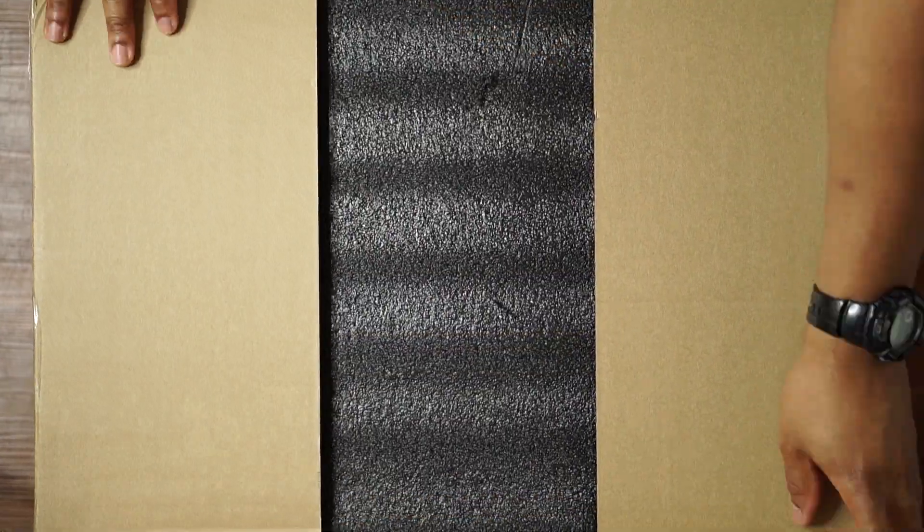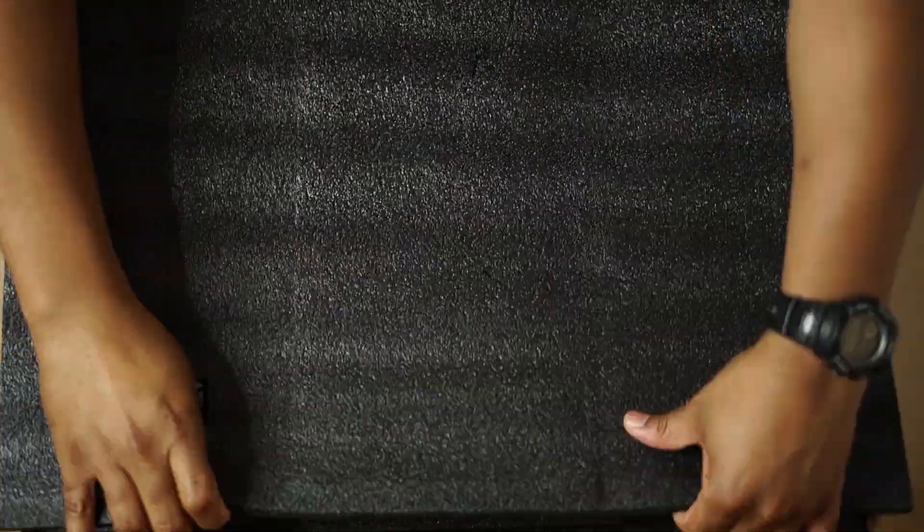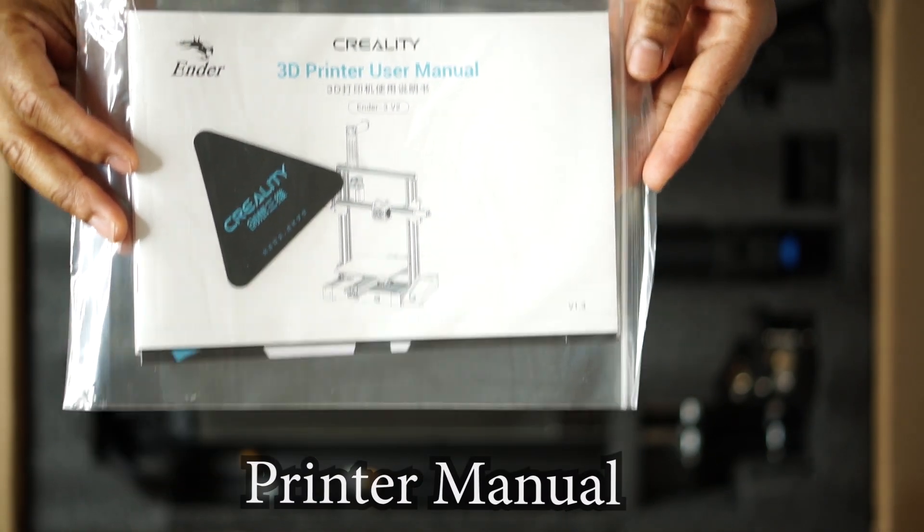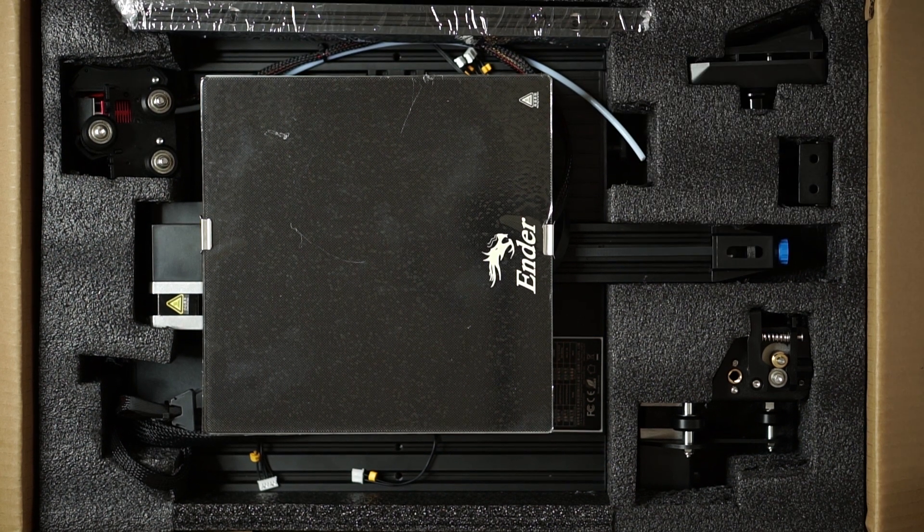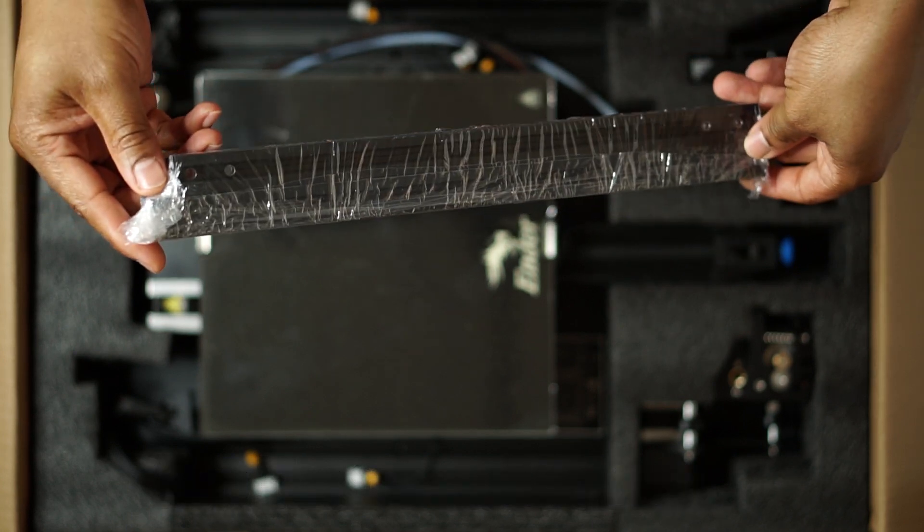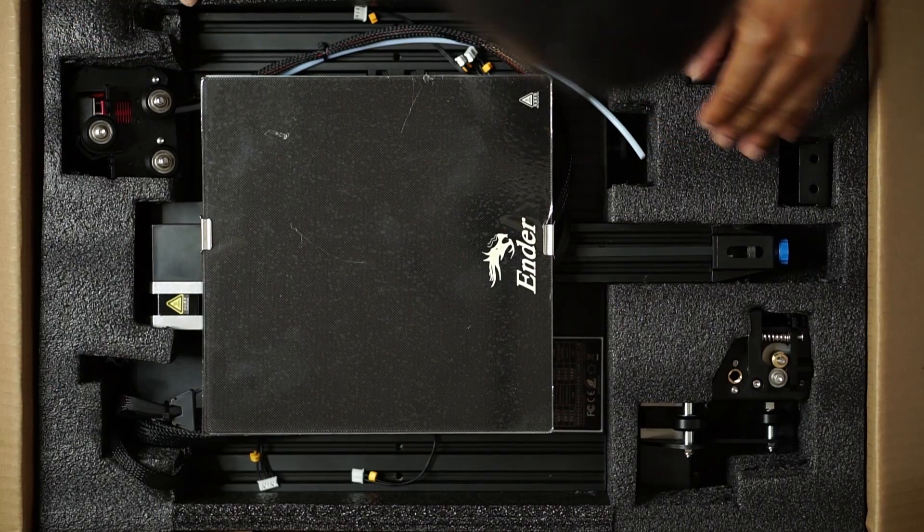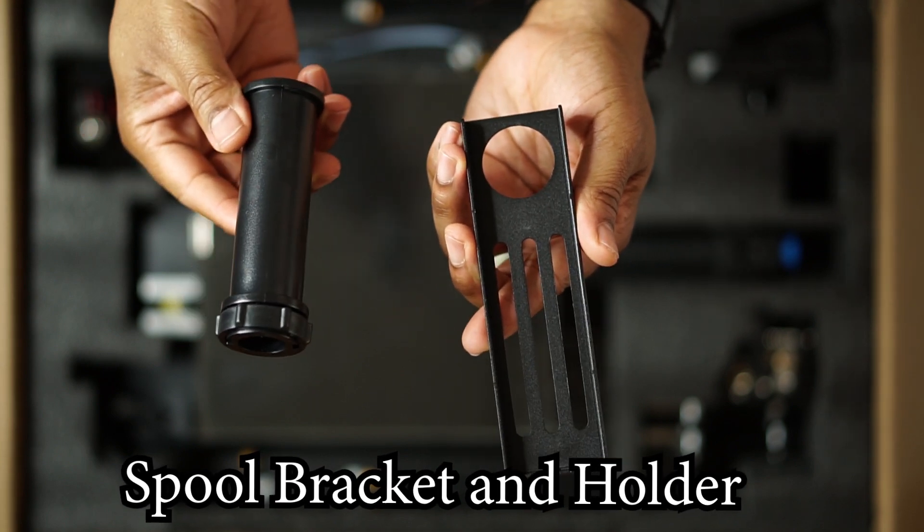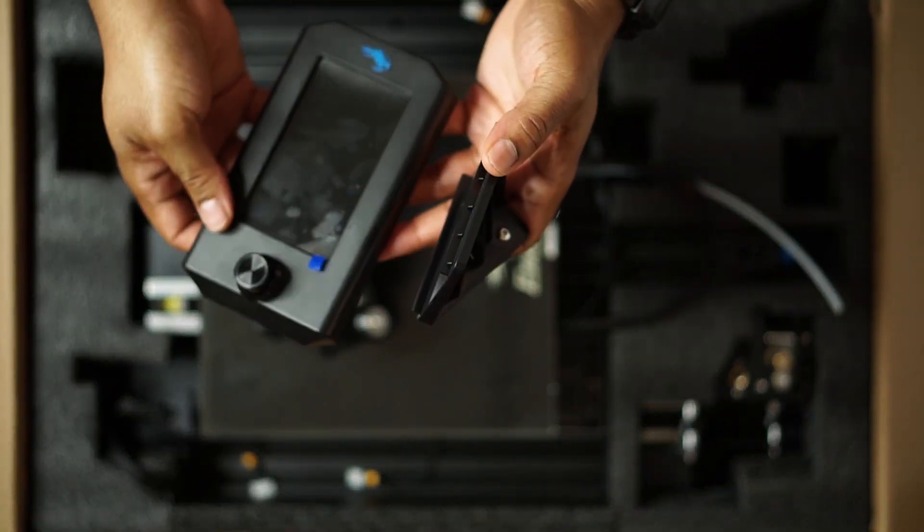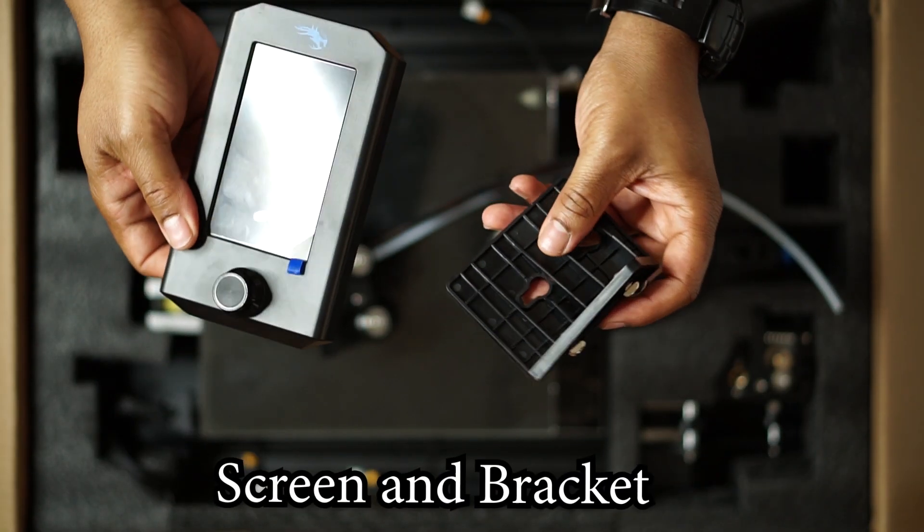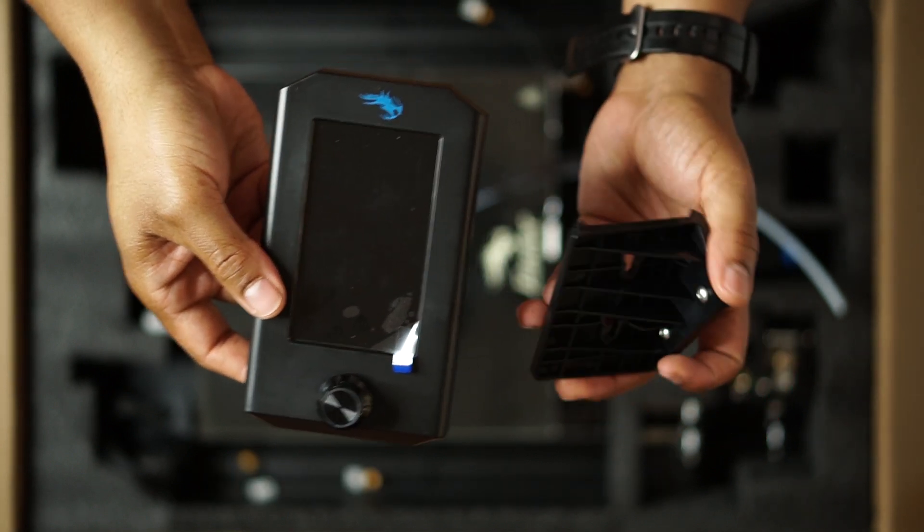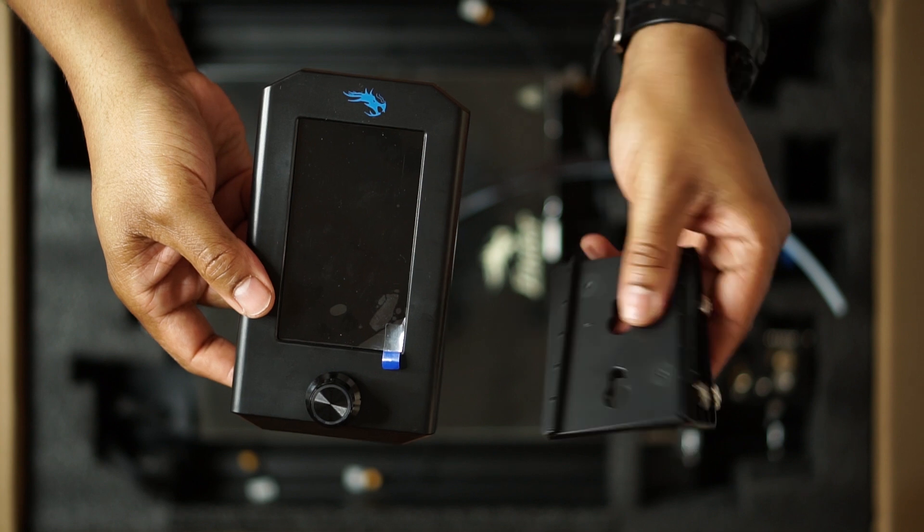First of all, I can say that this is very well packaged with a lot of foam cutouts. First we see the instruction manual which will tell you how to assemble the printer, and then here you have your top frame and x-axis extrusions. Then you have your spool bracket and holder, and here you have your screen assembly which includes the screen and the screen bracket.